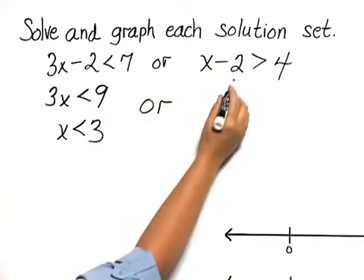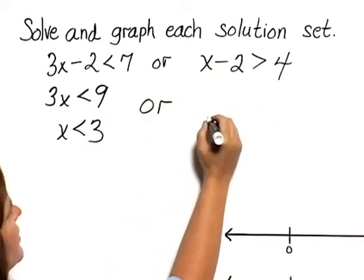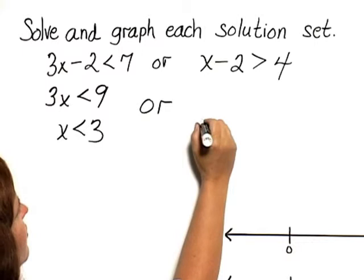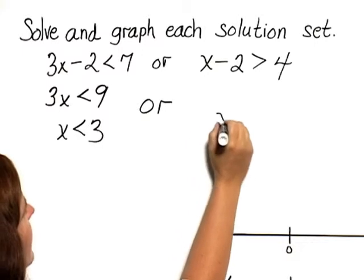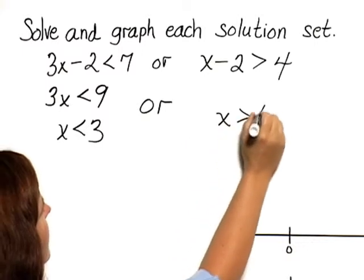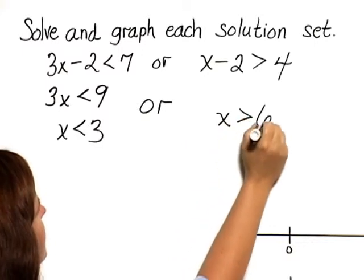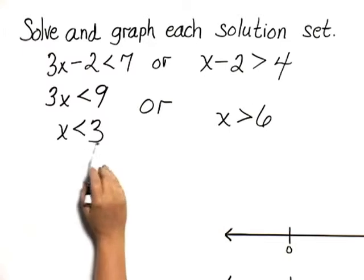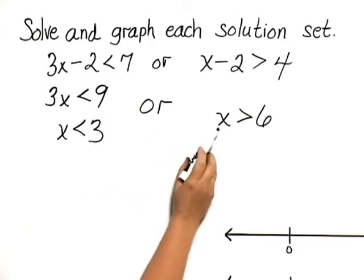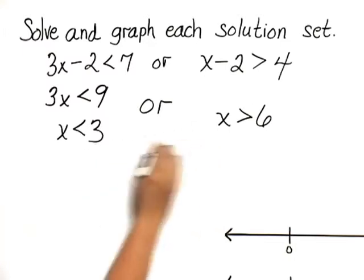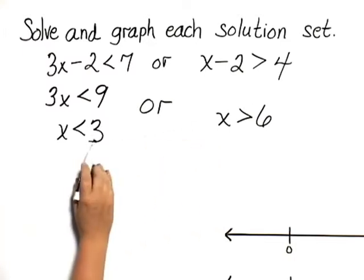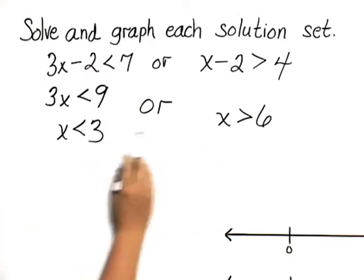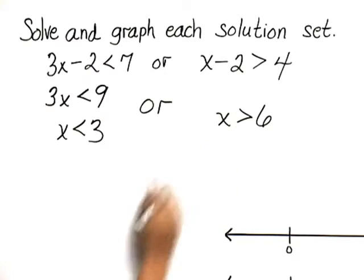Or, adding 2 to both sides here, we have x is greater than 6. So we're looking at the disjunction: x is less than 3, or x is greater than 6.